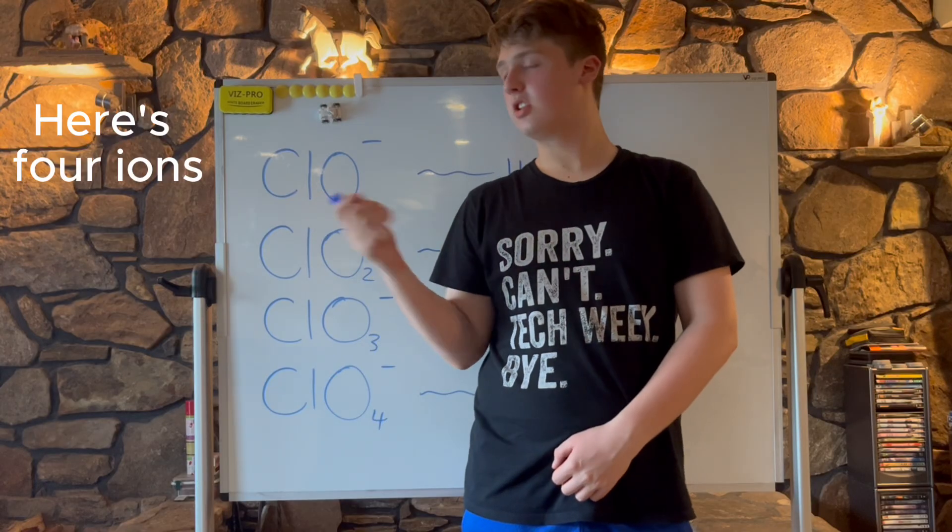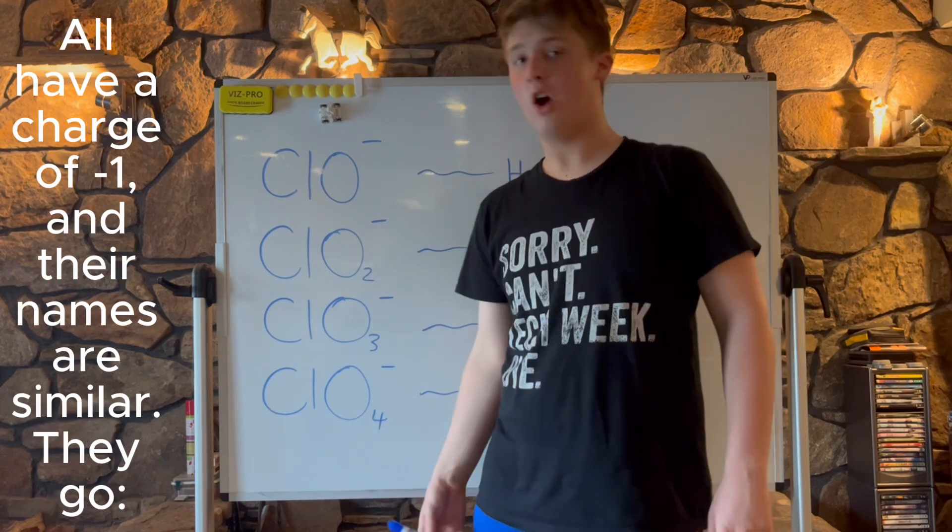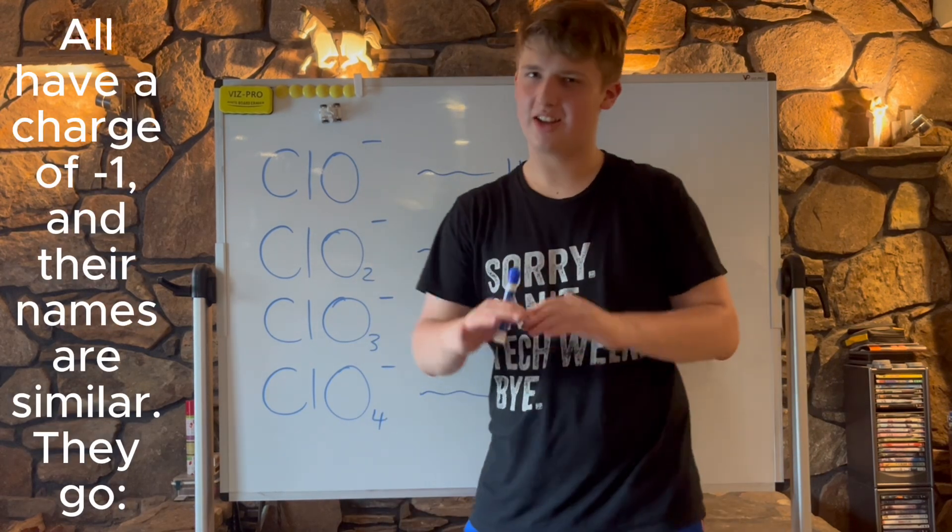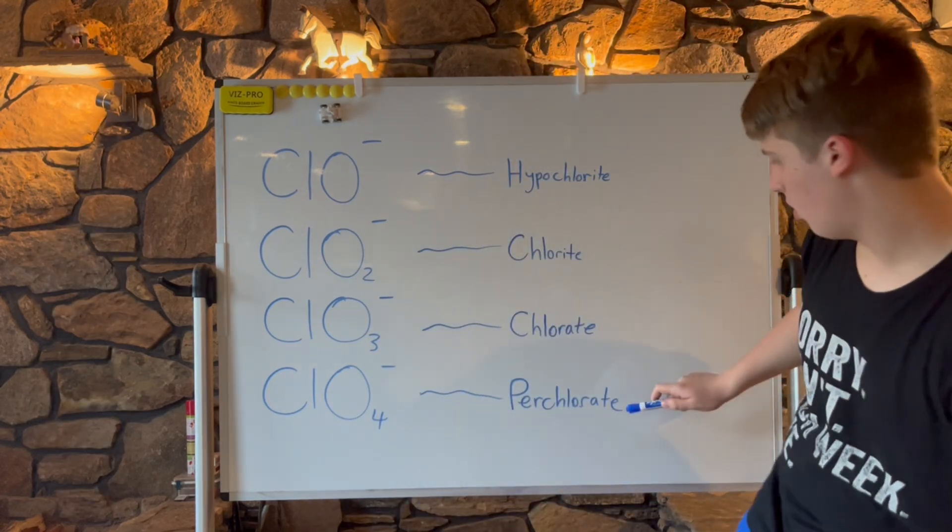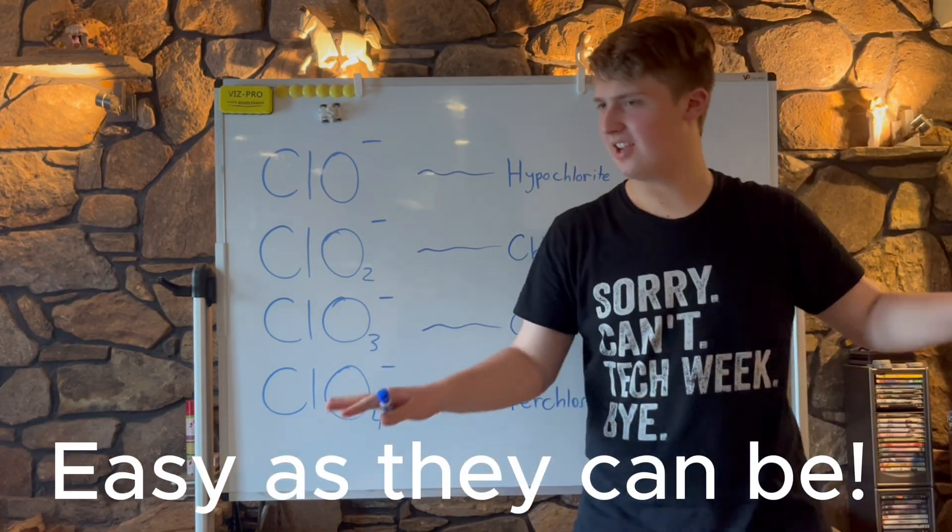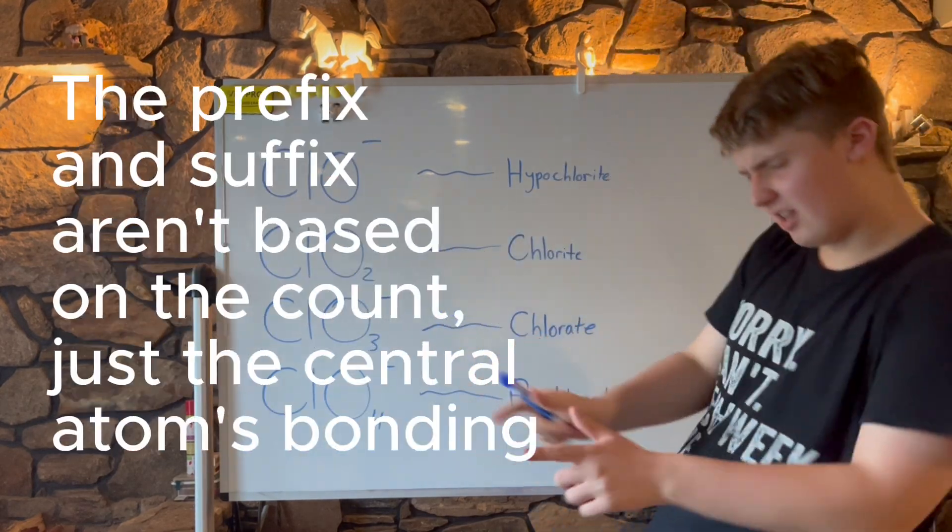Here's four ions: chlorine at the center, oxygen count ranges one to four. All have a charge of minus one and the names are similar. There you go: hypochlorite, chlorite, chlorate, perchlorate—easy as they can be. The prefix and suffix are based on the count and the central atom's bonding capability.